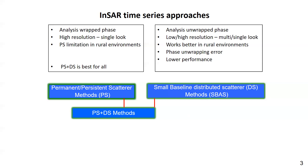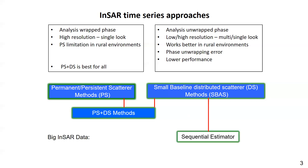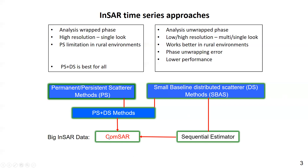For example, to work on the reduced data sets for distributed targets, there is a good algorithm available. Recently, we have proposed a feasible processing chain based on this estimator to account for both persistent and distributed targets.